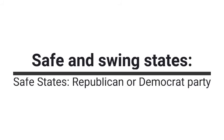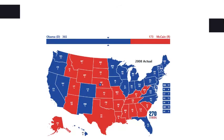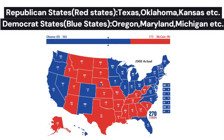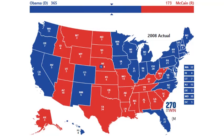Now let's talk about safe and swing states. Safe states can be Republican or Democratic. Republican or red states are states like Texas, Oklahoma, and Kansas. Democratic or blue states are the states of Oregon, Maryland, and Michigan. Both parties can count on those states to vote for them, and hence the name safe states.